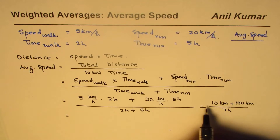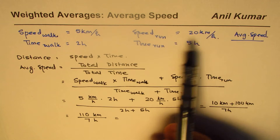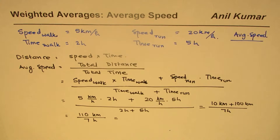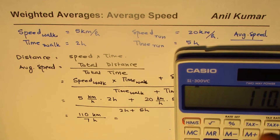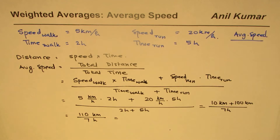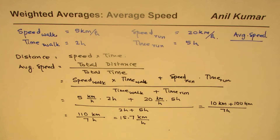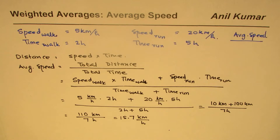That gives us 110 kilometers divided by 7 hours. So the average speed is not the simple addition divided by 2; it is 110 divided by 7. Using a calculator, that gives us 15.71, so approximately 15.7 kilometers per hour — that is the average speed of this person during this morning exercise.